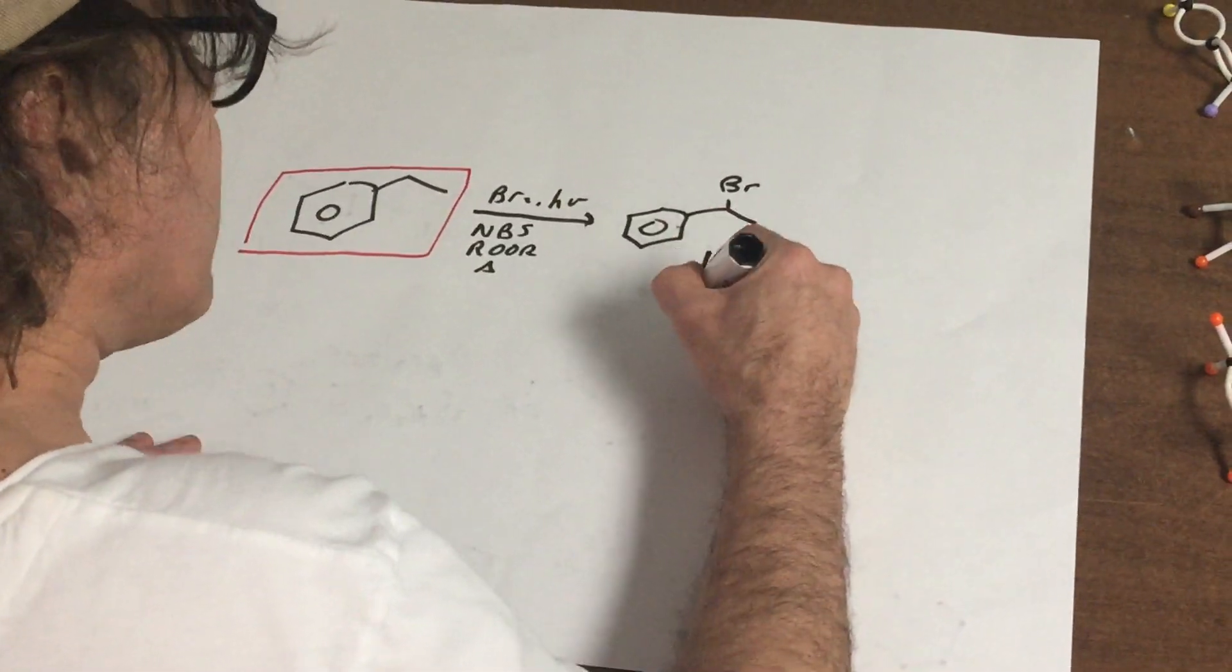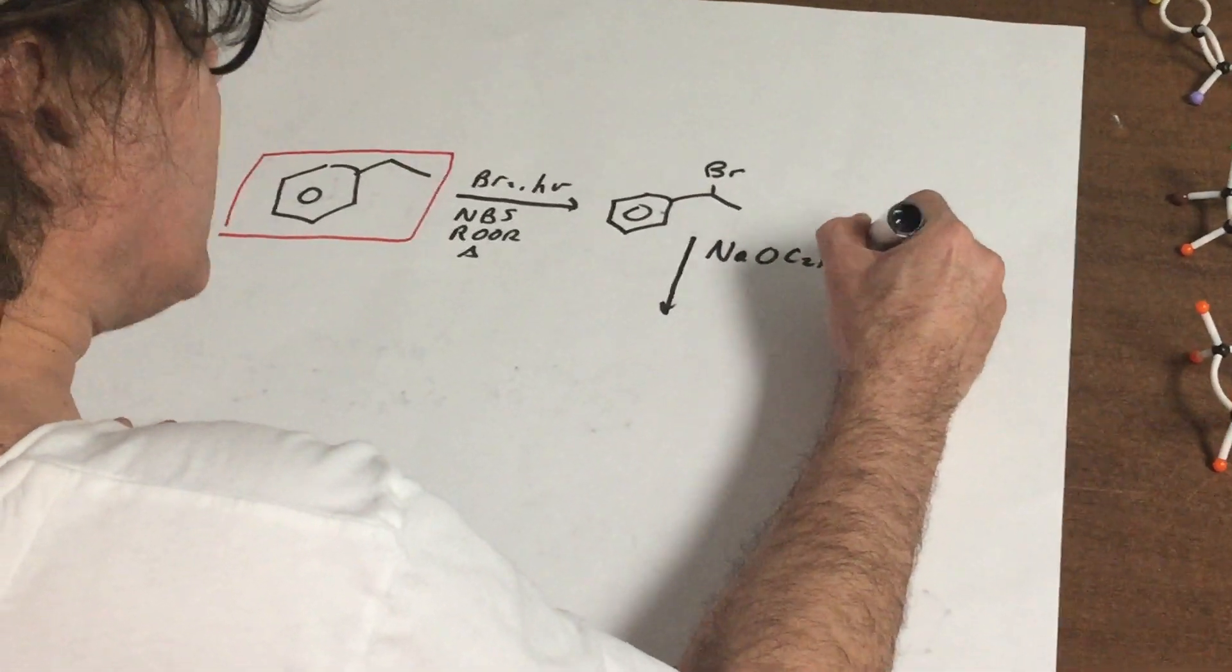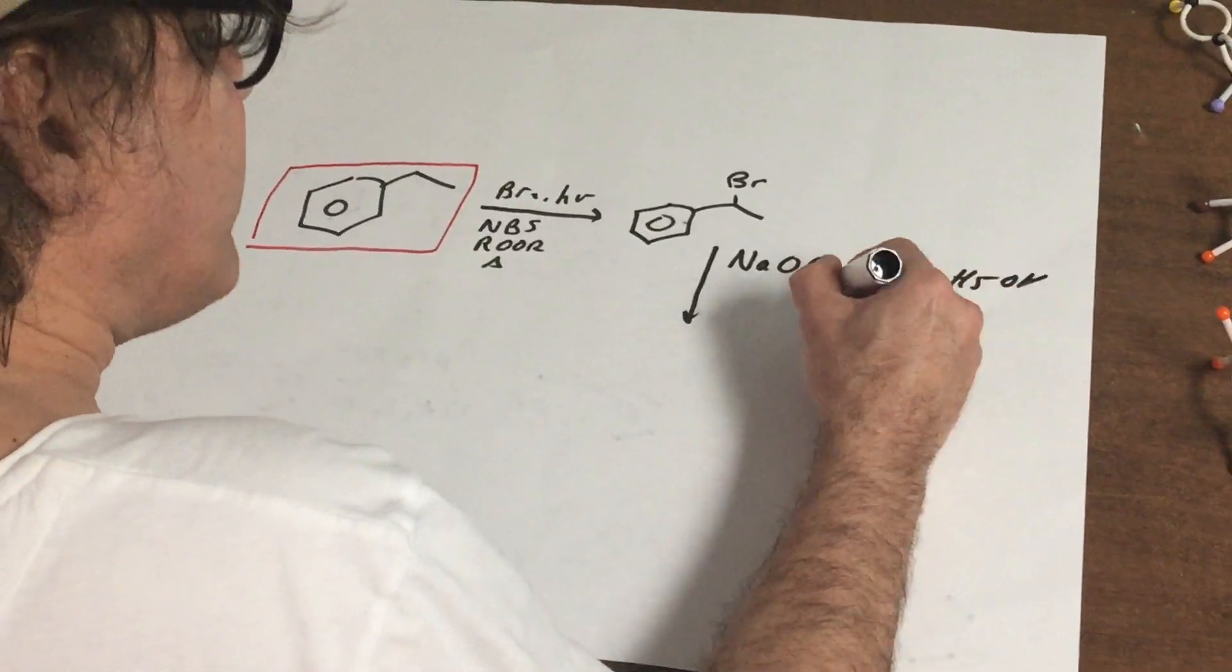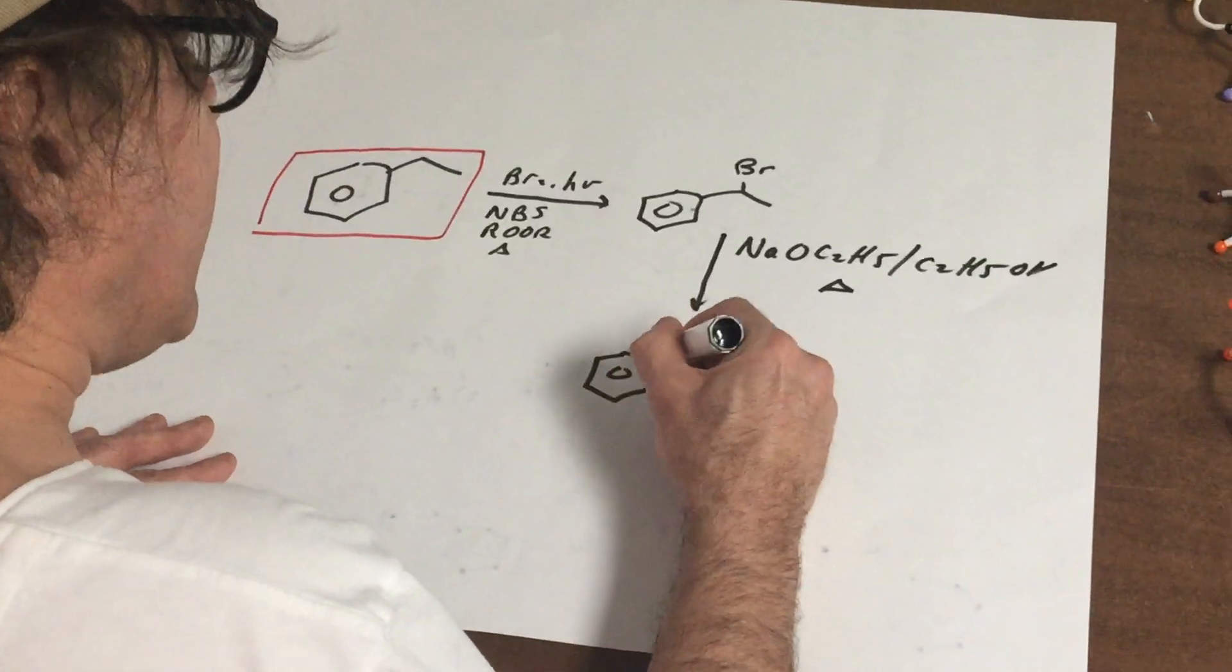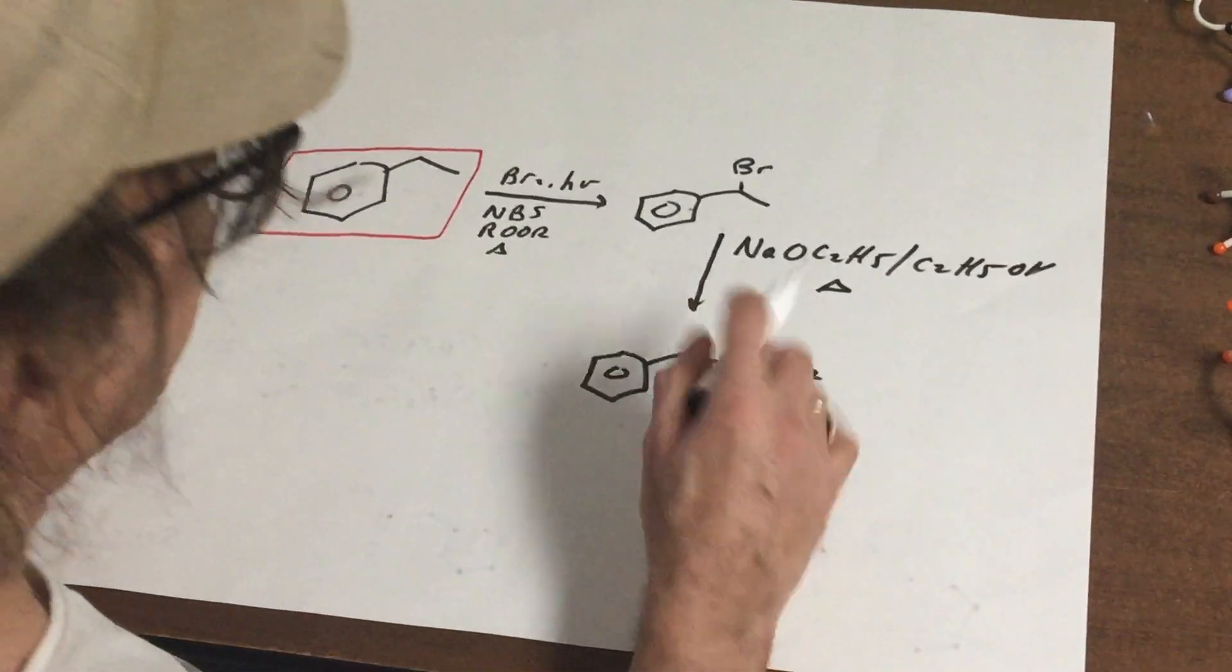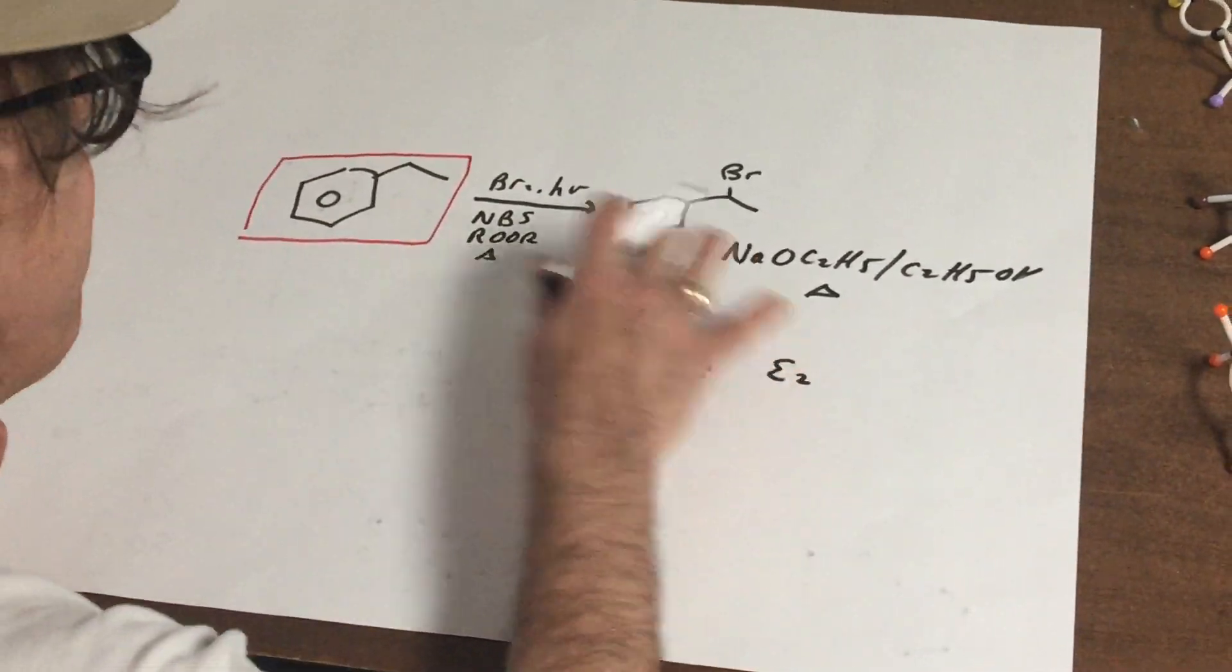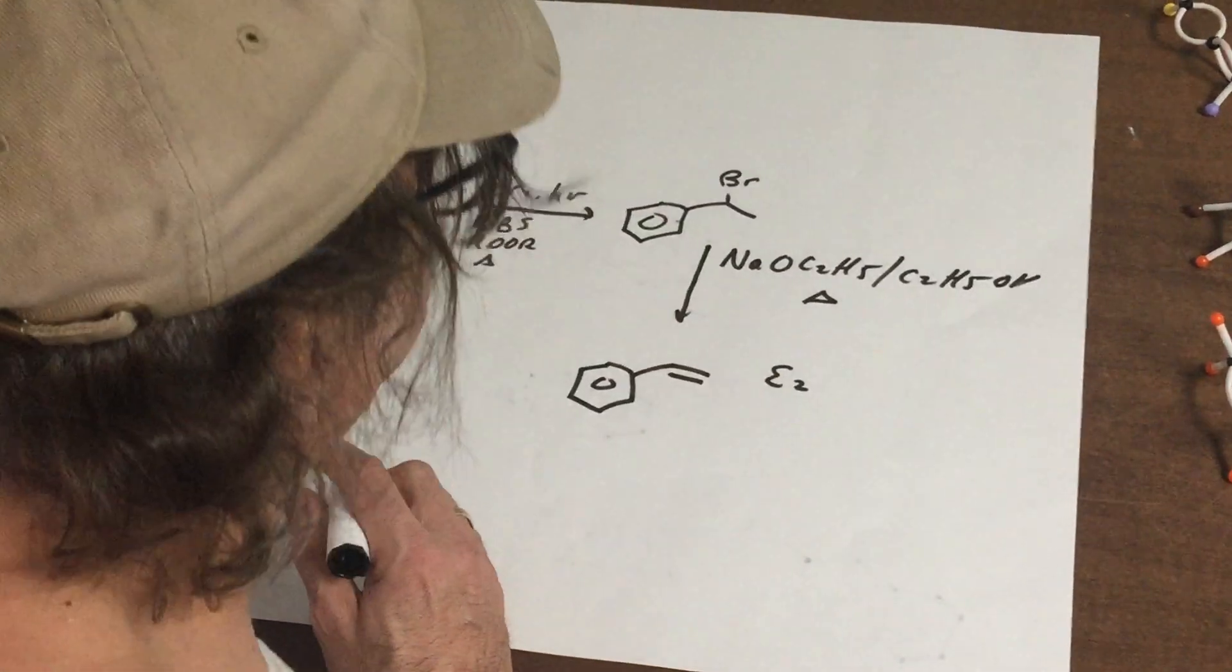In my next step, I'm going to treat it with a base. Oh, I don't know. Let's use sodium methoxide and ethanol. That's as good as any, but I'm going to put heat underneath it. Now, when I put heat underneath, that's going to give me the E2 product. If I didn't use heat, we might get a little bit of competition between the E2 and the SN2, but putting heat always finishes the job off.